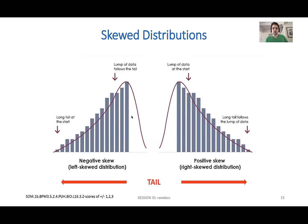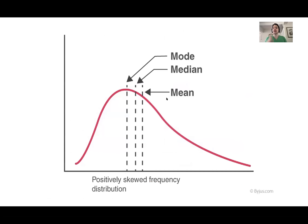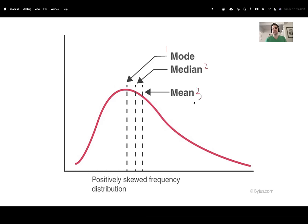When looking at skewed distribution, you always define it by which way the tail is going. Negative skew means the graph tail points to the left; positive skew goes to the right. With a positive skew, the mode is at the peak, the median comes next, and the mean is furthest — always toward the tail. Whichever side the tail is on, the mean will be on that side. I would venture to guess you will have a question like that.